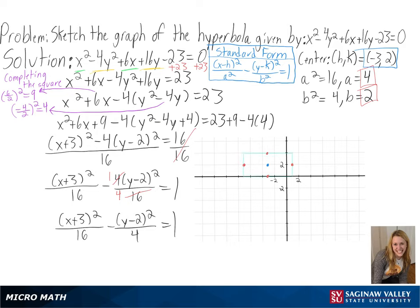Now we can sketch our central rectangle that will have side lengths of 2a and 2b, centered at the center. We can then sketch our asymptotes, since they will pass through the corners of our rectangle, and we can use our center and vertices to find their equations.